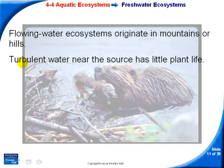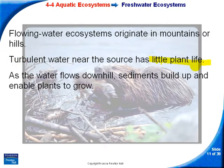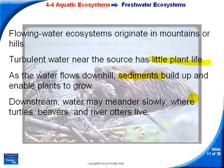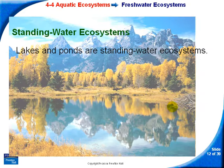At the start of a flowing water ecosystem, turbulent water — water moving pretty strongly — means very little plant life. As water flows downhill, sediments build up, forming soil, and plants are able to grow. When you get to the bottom of the hill downstream, the water slows and meanders, and you'll find a lot more animals living in that area.